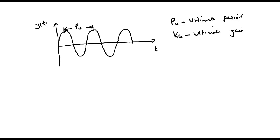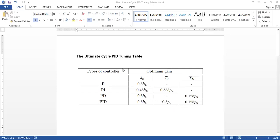The proportional gain at which the sustained oscillations occur is called the ultimate gain, denoted by K subscript u. With the values of the ultimate period and the ultimate gain, Ziegler and Nichols came up with the PID tuning table used for selecting the best values of kp, ki, and kd that would be able to meet the given performance specifications of the control system, as illustrated in this table.